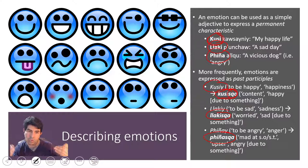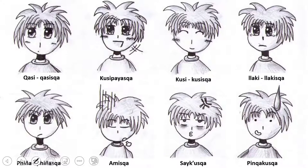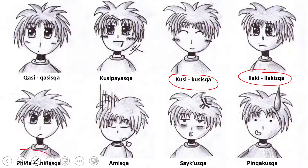Here are some other representative emotions. 'Kasi' or 'kasisqa' means calm, at ease — calmed due to something, like finishing your work and feeling fine. We already saw 'kusi/kusisqa,' 'liaki/liakisqa,' and 'piña/piñasqa.' Other interesting forms include 'saikuska,' meaning tired or exhausted; 'penkakuska,' from the verb 'penkakui' meaning to be ashamed, so 'penkakuska' means feeling embarrassment; and 'amiska,' from the verb 'ami' meaning to be fed up with or bored of something — so 'amiska' means bored, tired of something, fed up.